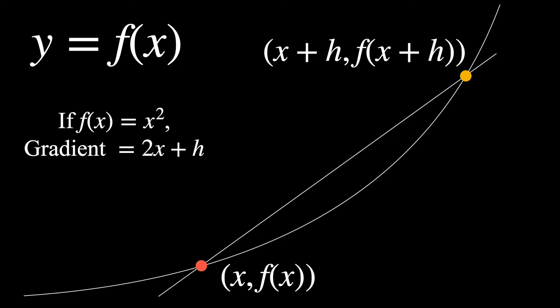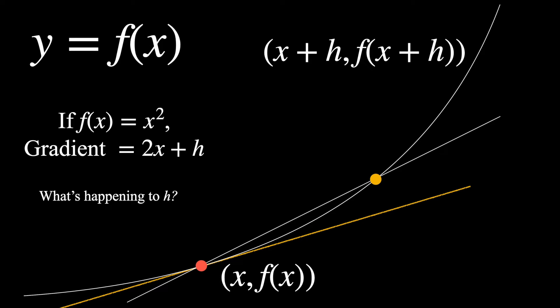So let's go back to our diagram. We want to make that plus h disappear. Well, suppose we move that yellow point closer to the red point. What's happening to h? It's decreasing. And what's happening to that line between the red and the yellow points? The gradient is approaching the gradient of the tangent. So as h is approaching zero, the gradient of the line is approaching the gradient of the tangent.